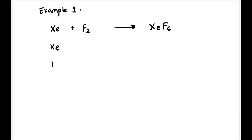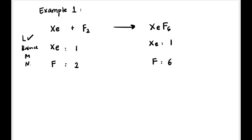Let's try the first example: Xe + F₂ → XeF₆. First, list down all the elements — we have Xe and F only. On the left hand side there is one Xe and two F. On the right hand side there is one Xe and six F.